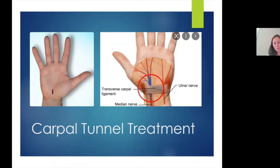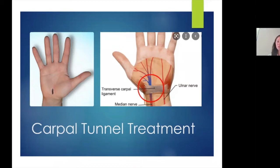In summary, carpal tunnel is a source of pain in the hand that we see a lot. It always involves pins and needles or numbness and tingling — so if you don't have those, it's very unlikely you have carpal tunnel syndrome. It is very treatable, but the key takeaway is it's better to treat it earlier rather than later. If we wait too long until the nerve is damaged, there is less predictability in outcomes.